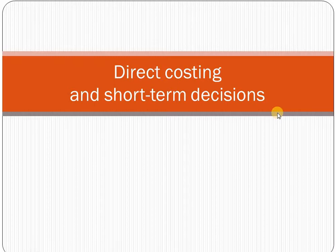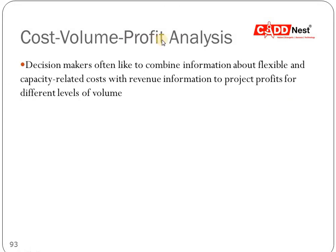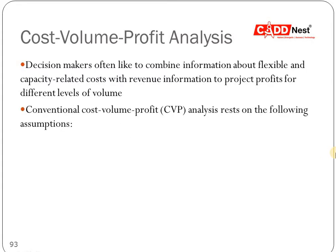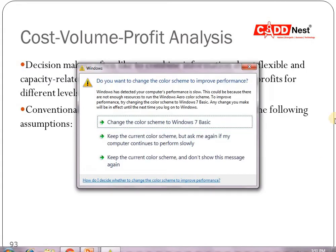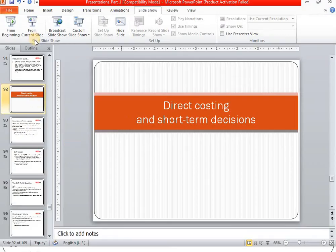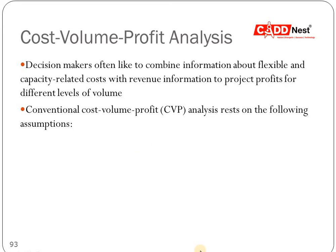So what is direct costing? We have Cost Volume Profit analysis, that is CVP analysis. Decision makers often like to combine information about flexible and capacity-related costs with revenue information to project profits for different levels of volume. This combination of flexible and capacity-related costs with revenue information is what makes up cost volume profit analysis.